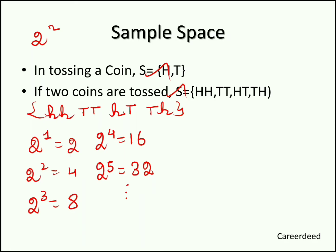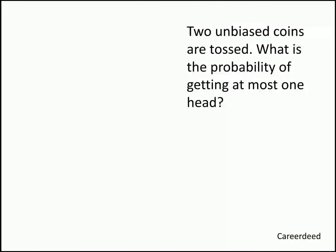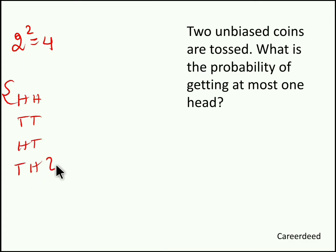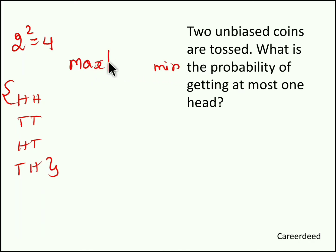Question 1: Two unbiased coins are tossed. What is the probability of getting at most one head? While tossing two coins the total sample space is 2 power 2, which is 4: head-head, tail-tail, head-tail, and tail-head. The condition is at most one head. At most means the flow happens from maximum to minimum — maximum there should be only one head, and minimum is always 0.